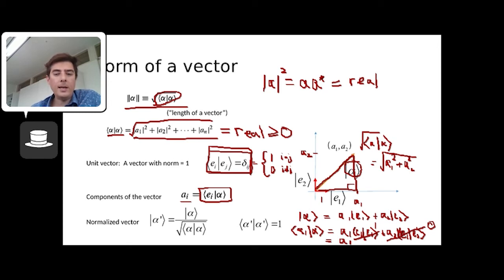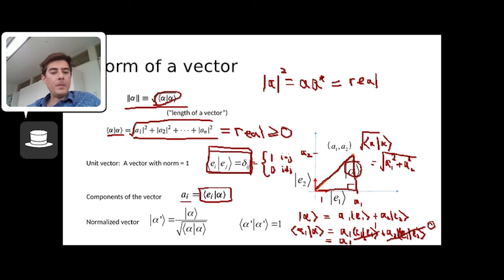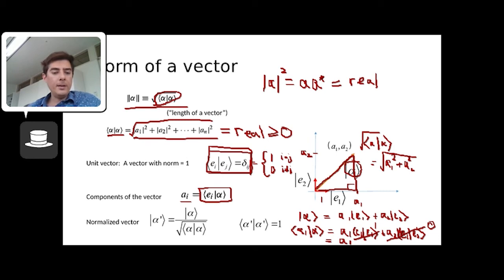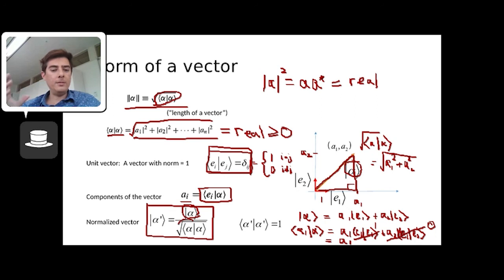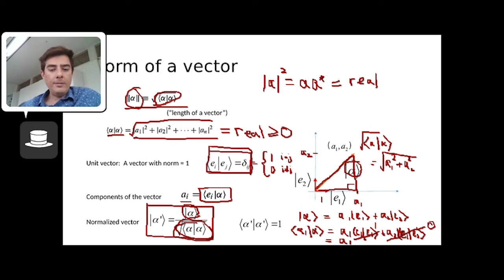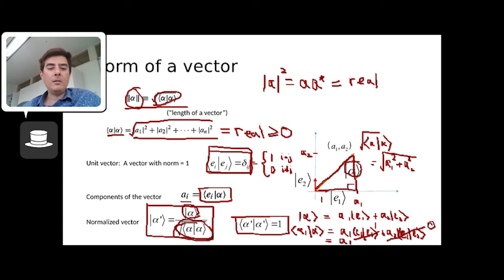Finally, you can always take a vector that doesn't have length one and normalize it — turn it into a vector of length one — by just dividing the vector by the square root of its inner product with itself. That's the length of the vector. If you divide the vector by its own length (which is a scalar), you get a vector of length one. This process is called normalization, and you can verify that taking the inner product of the normalized vector with itself gives one.